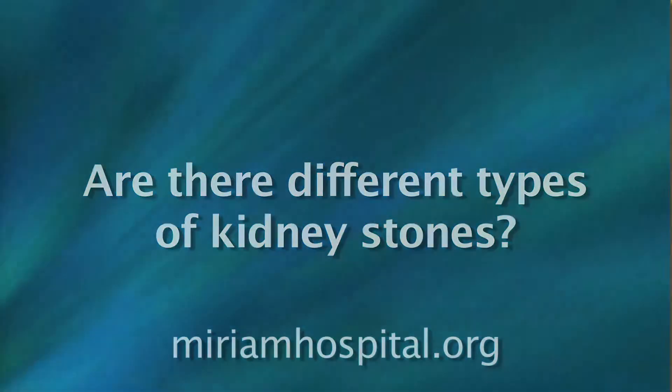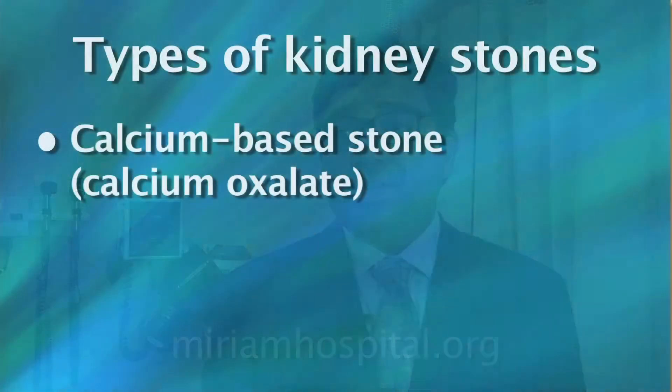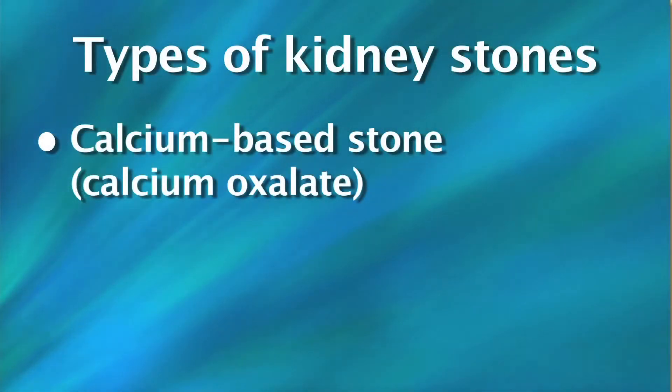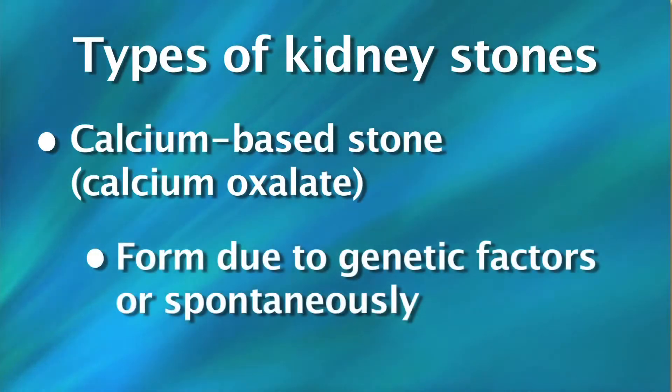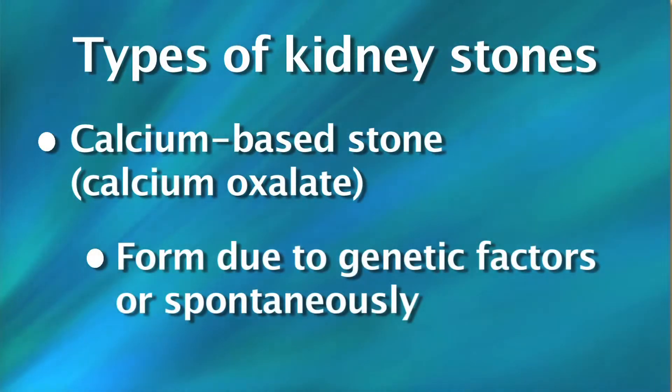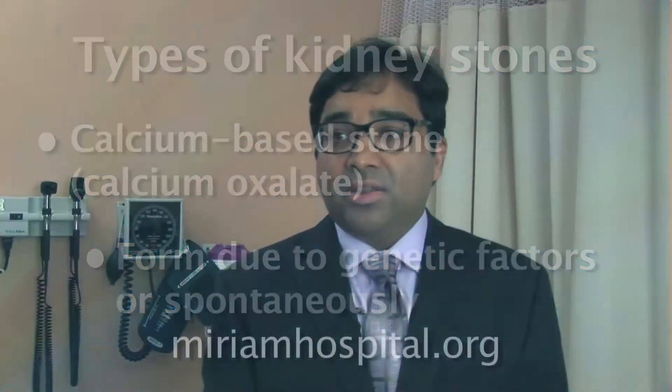There are multiple types of kidney stones. The most common type is a calcium-based stone, usually calcium oxalate. Those usually form in people with a genetic history or spontaneously. Types of patients who get those stones can be people who have had gastric bypass surgery, or just the general population from dehydration.